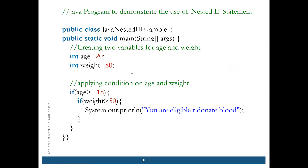The next topic is nested if. In nested if, if the first condition is true then it will enter the code, and there is a double condition — this condition should be true AND this inner condition should also be true — then only it will enter that code. The inner if can also be false; if it is false it will not print what is inside the loop.